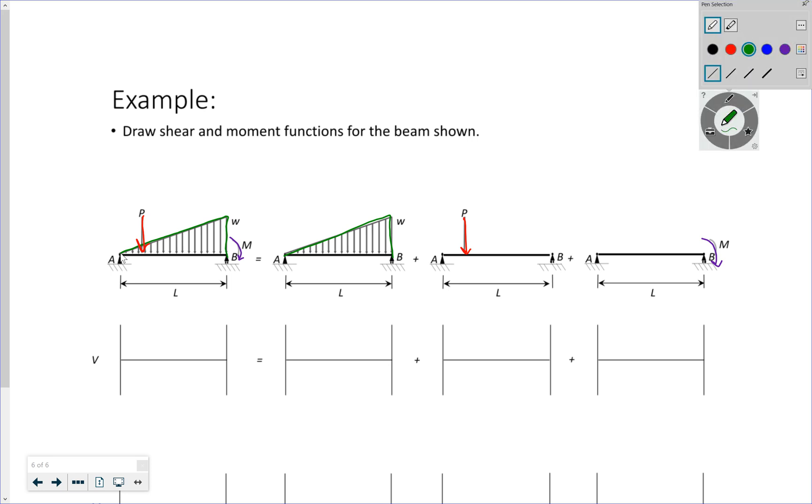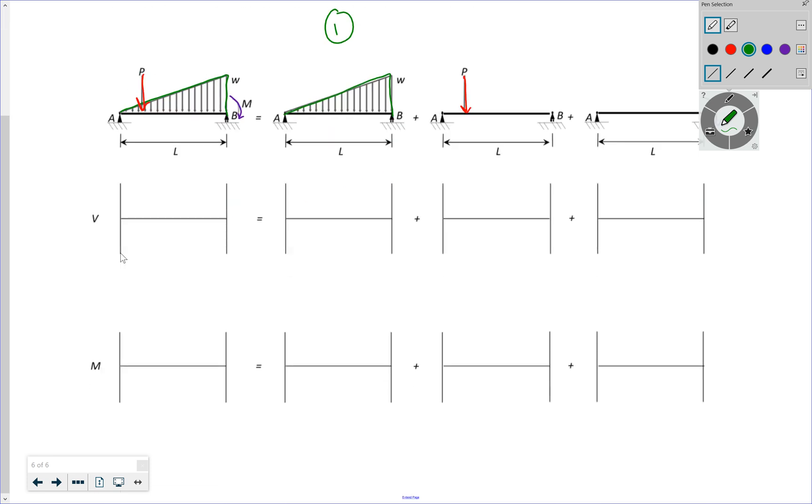If I look at number one, if I draw the shear diagram for a triangular distributed load, it would look something like that. That crosses a little bit after halfway. This is my shear associated with that one. Notice my change in shear from here to here, from this point to this point, is equal to the applied load, which is one-half W times L.